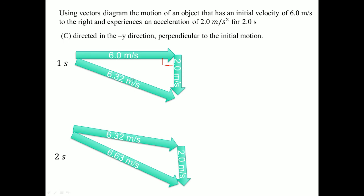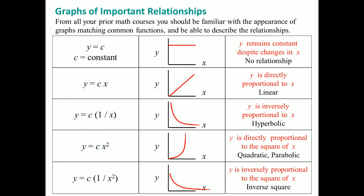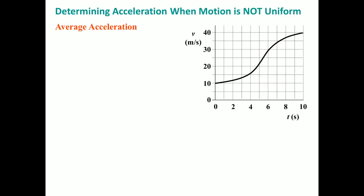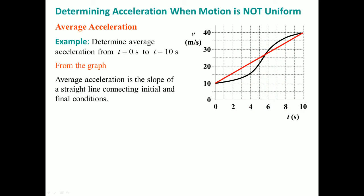That's about it for the main content. The different kinematic relationships are summarized here. Average acceleration can be determined as just a slope — this can be seen as your V-initial and V-final. You can find the acceleration by looking at the slope, which in this case is 3 meters per second squared.